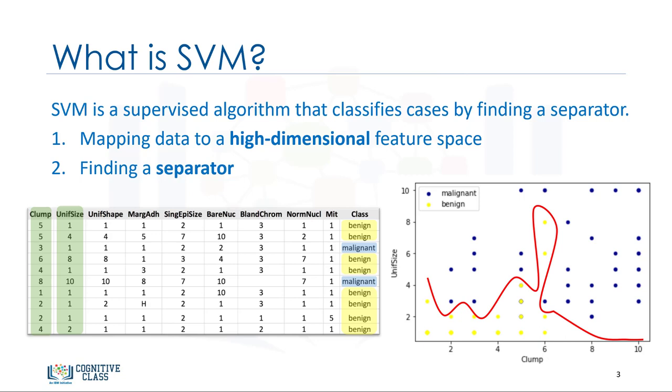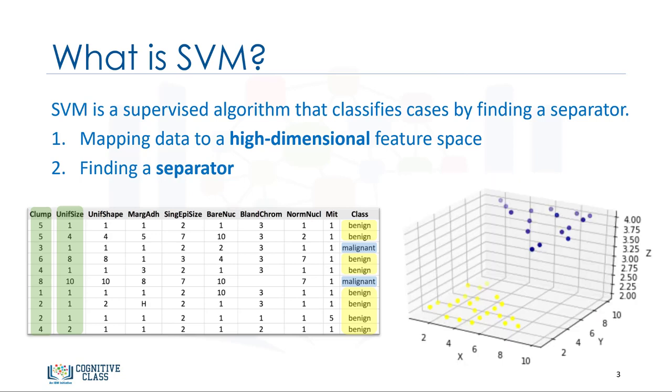The two categories can be separated with a curve, but not a line, which is the case for most real-world datasets. We can transfer this data to a higher-dimensional space, for example, mapping it to a three-dimensional space.